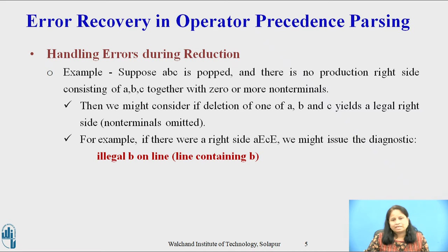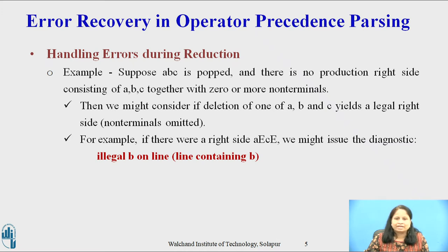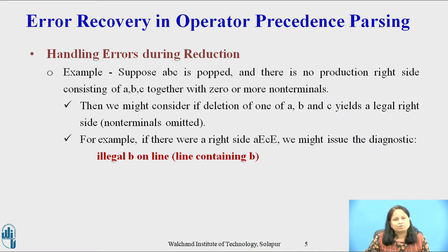Example: suppose ABC is popped and there is no production right side consisting of ABC together with zero or more non-terminals. Then we might consider if deletion of one of A, B, and C yields a legal right side. For example, if there were a right side A, E, C, we might issue the diagnostic 'illegal B on line'.